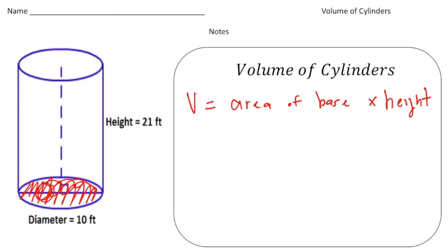To find the area of a circle, it's pi times radius squared. So the area of the base is pi times the radius squared, and then you multiply it by the height to get the volume: V = πr²h.